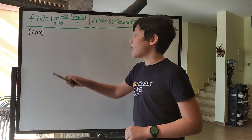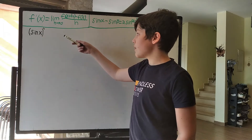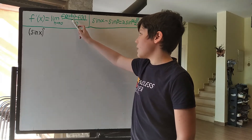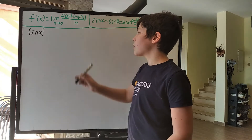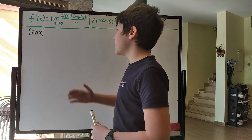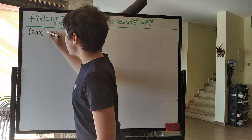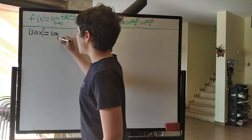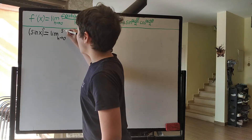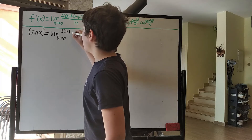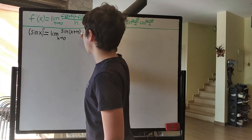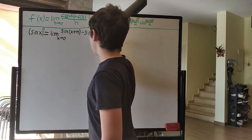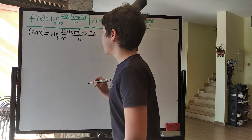The formula goes like this: f'(x), or the derivative of f(x), is equal to the limit as h approaches 0 of f(x+h) minus f(x), all over h. So we can just replace f(x) with sin(x) to get the limit as h approaches 0 of sin(x+h) minus sin(x), all over h.